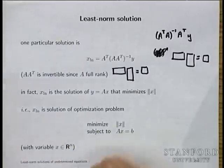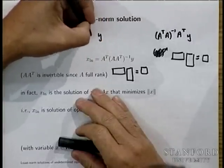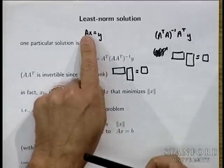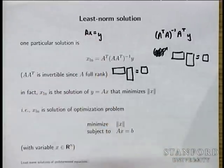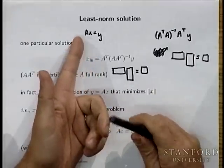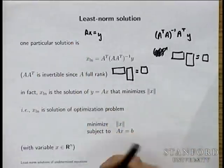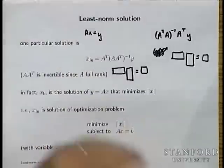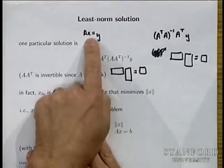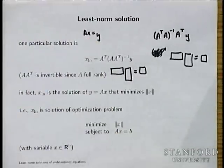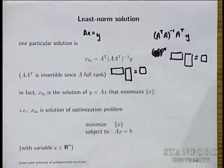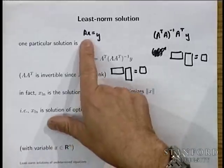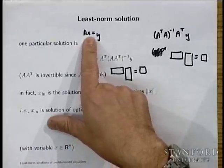In least norm solution, we're studying the equation Ax equals y. In this case, A is fat and we're assuming it's full rank. So that means you have m equations that constrain a variable x, but you have fewer equations than unknowns, meaning you have extra degrees of freedom. What that means is that Ax equals y actually has lots of solutions — the null space of A is more than just the zero vector; it's exactly n minus m dimensional.